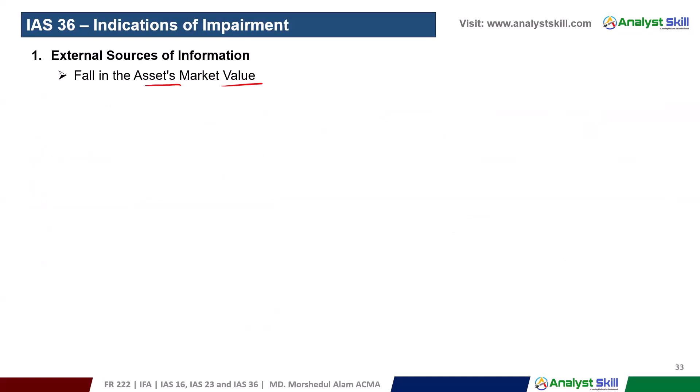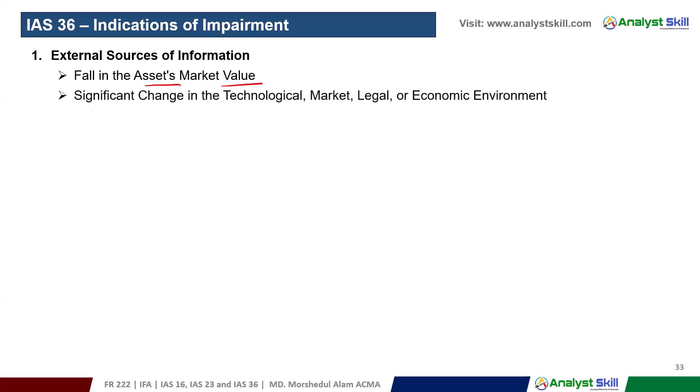External indicators of impairment include a significant decline in market value. For example, if an asset was acquired for 40,000,000 but the market has dropped significantly, that is an indicator. A significant change in the technological or market environment is also an indicator.